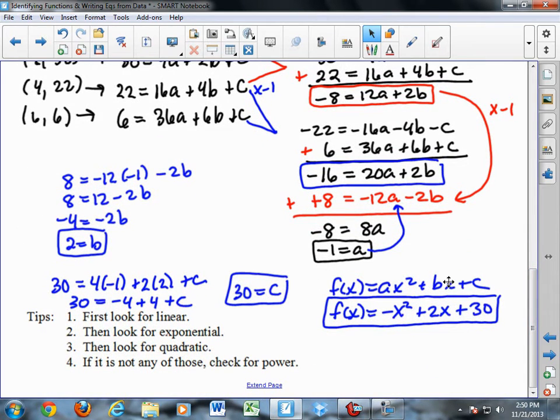I go back looking at my original equation. I guess I wrote it down here. There's my general equation. I know what a, b, and c are now. I substitute in negative 1, 2, and 30, and there is my quadratic equation.